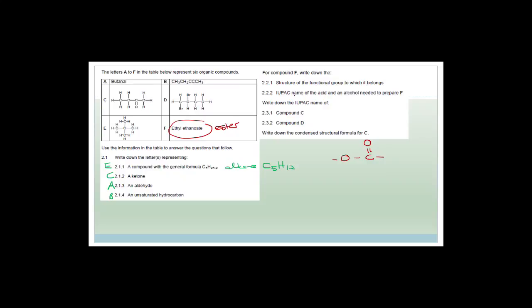For the IUPAC names of the acid and alcohol that make up ethyl ethanoate: remember the first part of the name is the alcohol, so this gives ethanol, and ethanoate gives ethanoic acid.